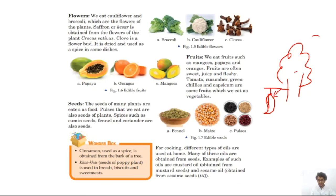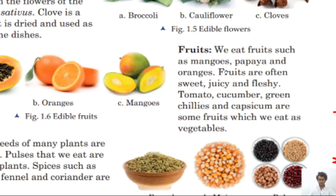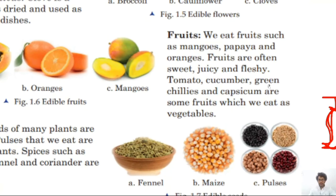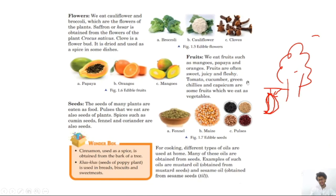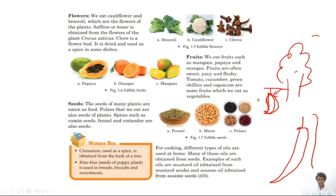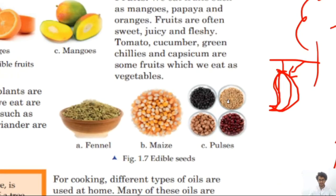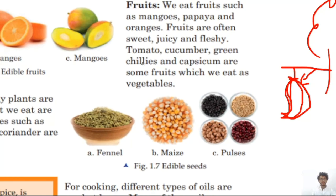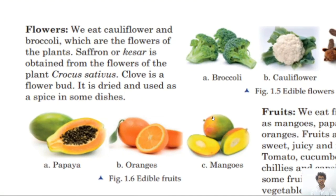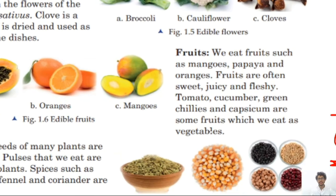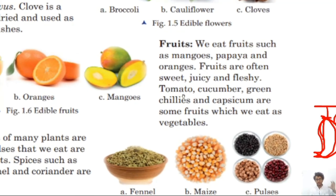Tomato, cucumber, green chilies, and capsicum are some fruits we eat as vegetables. Be careful — don't be confused. Tomato, cucumber, green chilies, and capsicum are technically fruits, but we eat these fruits as vegetables.